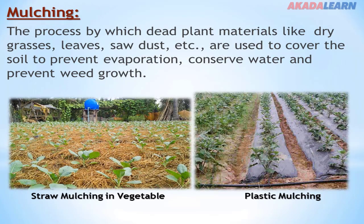Mulching. Mulching is a process by which dead plant materials like dry grasses, leaves, and sawdust are used to cover the soil to prevent evaporation, conserve water, and prevent weed growth. From the picture here, we have two types of mulching — one using straw and the other using plastic material. Both serve the same purpose: to conserve soil moisture and to prevent the growth of weeds.